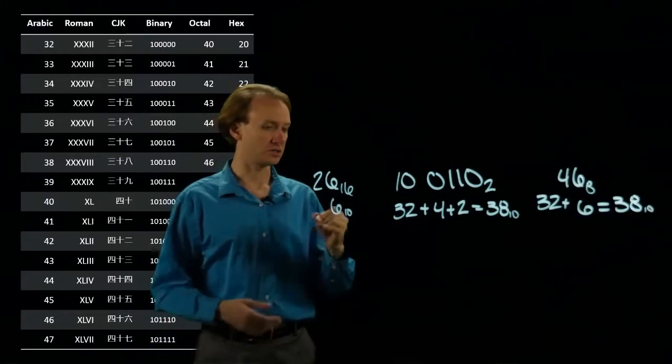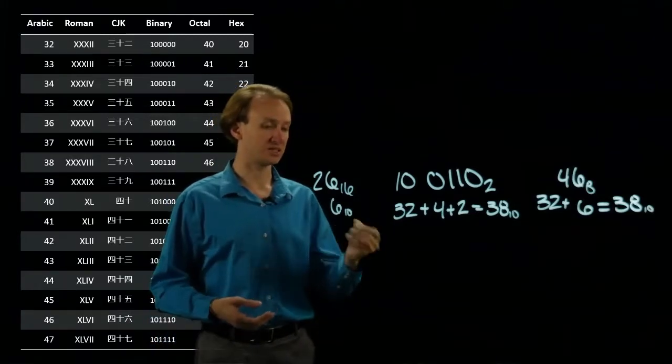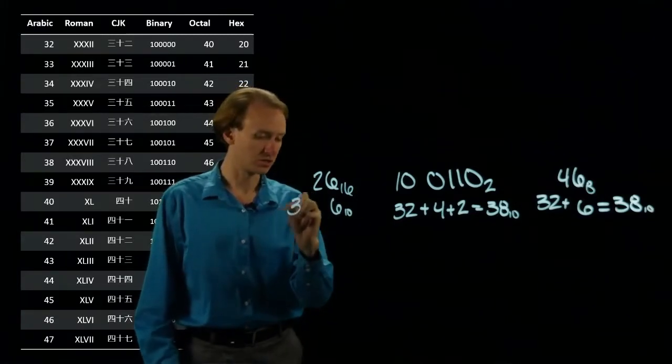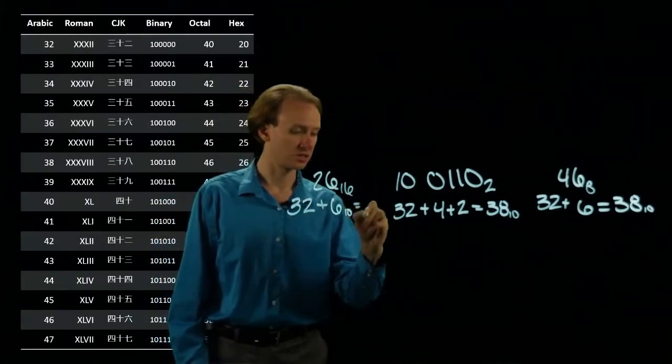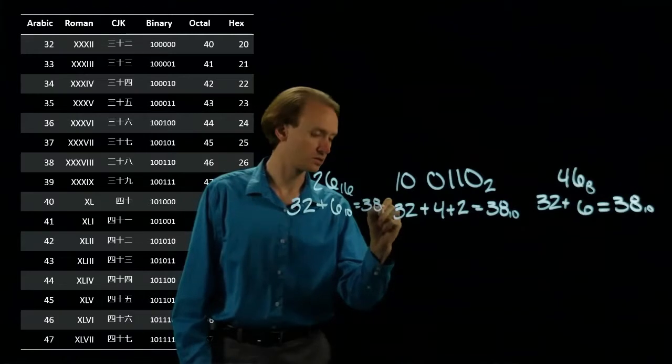2, though, is 2 times 16, which is 32. So, 32 plus 6 is 38 in decimal.